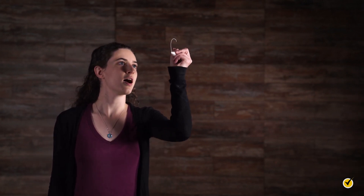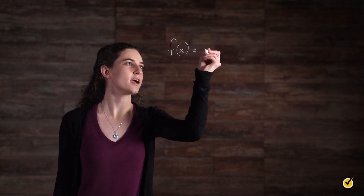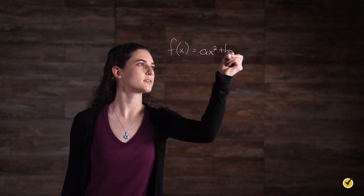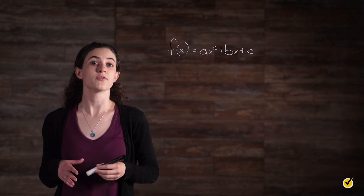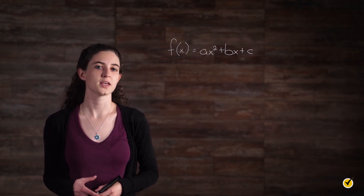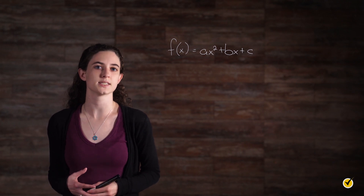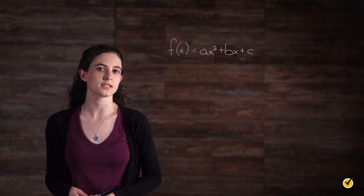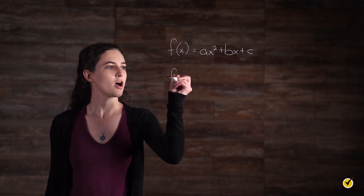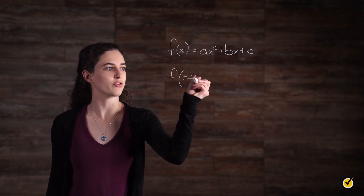There are three main forms of quadratic equations. Our goals here are to determine the way the function opens and to find the y-coordinate of the vertex. When quadratic functions are in standard form, they generally look like this: f(x) = ax² + bx + c. If a is positive, the function opens up. If it's negative, the function opens down. In this form, the y-coordinate of the vertex is found by evaluating f of negative b over 2a.